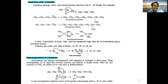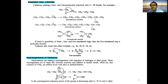Rearrangement of carbenes is also possible. Hydrogen can migrate to the carbene carbon, forming a double bond. Similarly, an alkyl group can migrate to the carbene carbon to give a double bond between those two carbons. The migrating power decreases from hydrogen to alkyl groups.